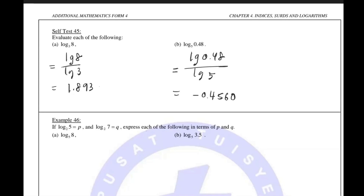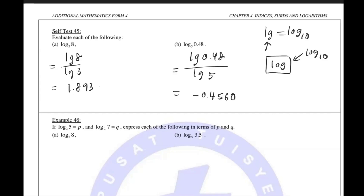Someone asks: how come for this question we don't need to add a new base? We are adding a new base — it's just that the base I'm using is base 10. Log base 10 has the short form LG, so you don't have to write so many things. In your calculator, LOG means log base 10 because there isn't enough space to print the 10. When you write log, you need to put a base — I'm just explaining the calculator limitation.